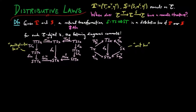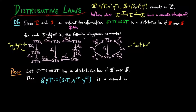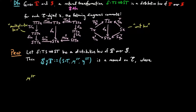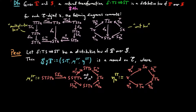We now show that a distributive law allows us to define a monadic structure on the composite endofunctor ST. Let delta be a distributive law of T over S as above. Then ST via delta is a monad on E, where the multiplication mu_ST is given by the following composite, which has two equivalent expressions by the naturality of the multiplication mu_S of the monad S. The unit eta_ST is given by the following composite, which also has two equivalent expressions by the naturality of the unit eta_S of the monad S.